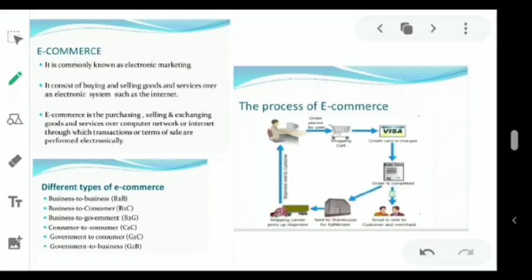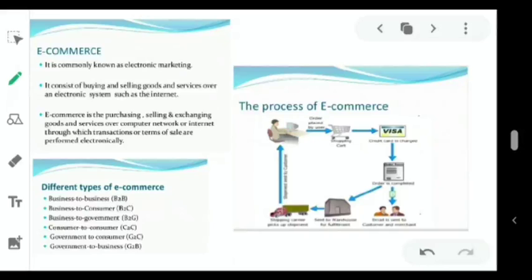Government to Business is also there — the government sells some products to business agencies. Now, how does e-commerce work? You open a particular site, keep your desired item in a cart, and then from the cart you pay via debit/credit card, bank payment, or UPI mode. They receive your order, pick it up from the warehouse, drop it at nearby places, and deliver it. That is how e-commerce works.